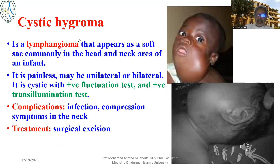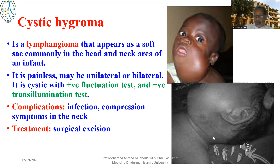The fourth subcutaneous swelling is a cystic hygroma — a sort of lymphangioma, a collection of lymph fluid that appears as a soft swelling, commonly in the head and neck region of an infant. It is usually painless and unilateral, though it can be bilateral, with a positive fluctuation test and a brilliantly positive transillumination test. As complications, it might become infected or cause compression symptoms in the neck, particularly for breathing. Treatment is usually surgical excision.